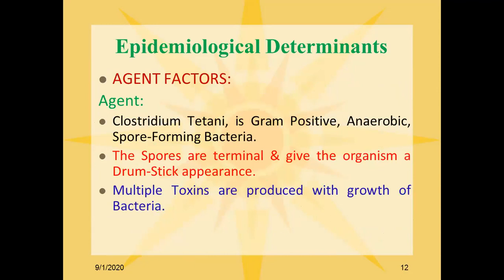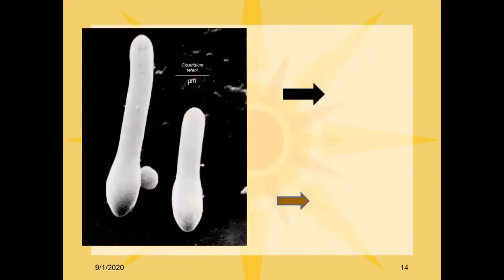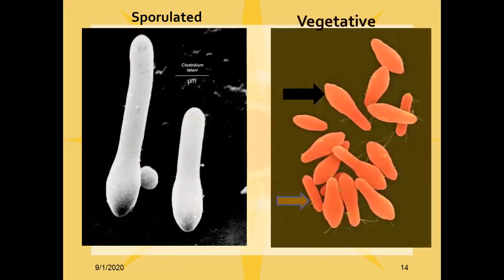Regarding the causative agent: Clostridium tetani is a Gram-positive anaerobic spore-forming bacterium. The spores are terminal and give the organism a drumstick appearance. Multiple toxins are produced with the growth of the bacteria. There are two forms of the bacteria: the sporulating form and the vegetative form, and this vegetative form is responsible for development of the disease.